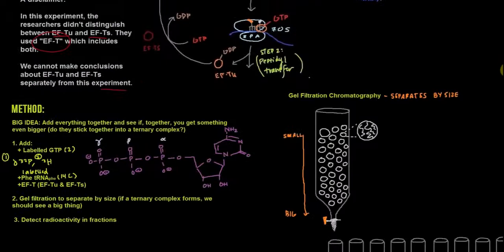So what did these experimenters do? The big idea is that if we add everything together and see if together you get something that's even bigger, then we form a ternary complex from the things that we're putting together. So what are we putting together?